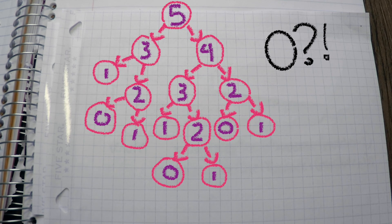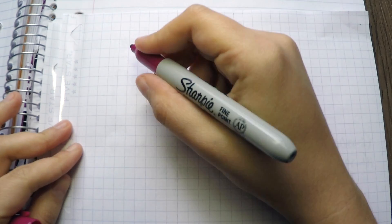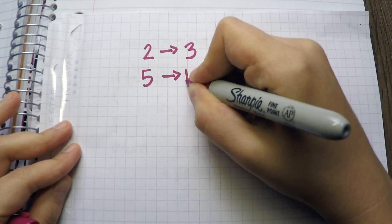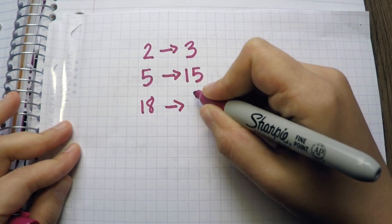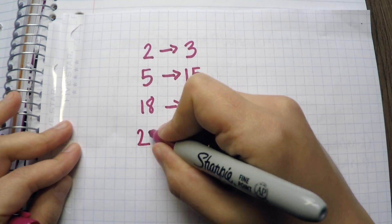To find the complexity, we need to figure out how many times we called our function. If my number is 2, I will call the function 3 times. If it is 5, 15 times. 18, 8,361 times.